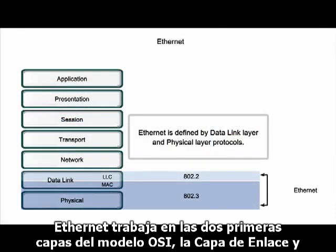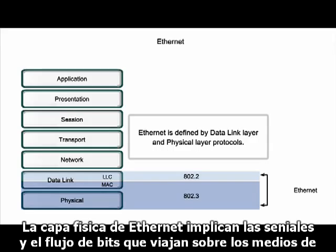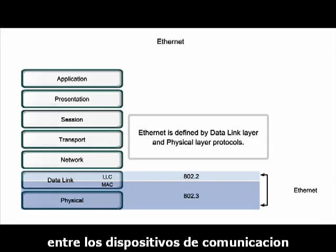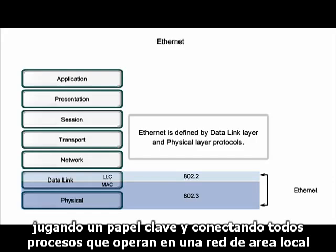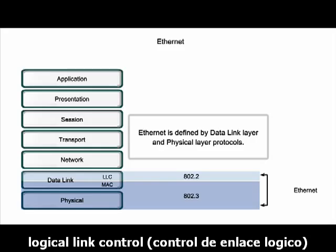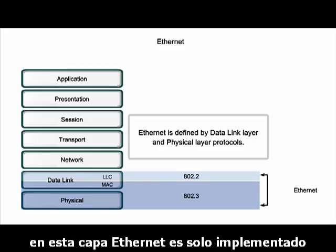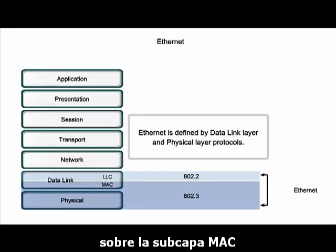Ethernet has responsibility at the lower two layers of the OSI model: the data link and physical layers. At the physical layer, Ethernet involves signals and bit streams that travel on the media between communication devices, playing a key role in connecting all end devices that operate on a local area network. Ethernet divides the data link layer into two sub-layers: logical link control and media access control. At this layer, Ethernet is only implemented on the MAC sub-layer.